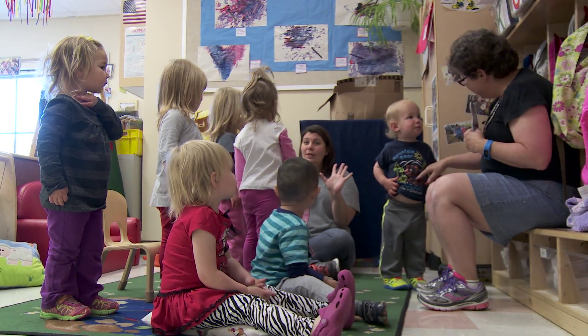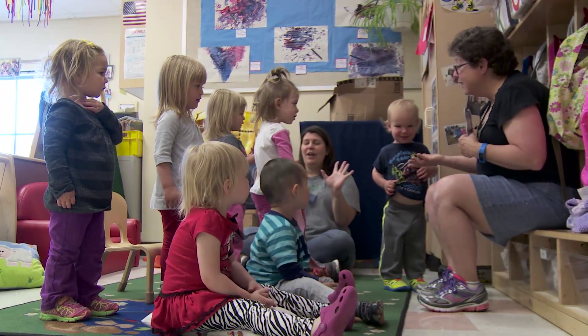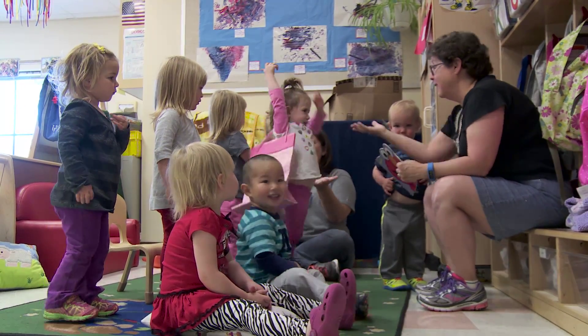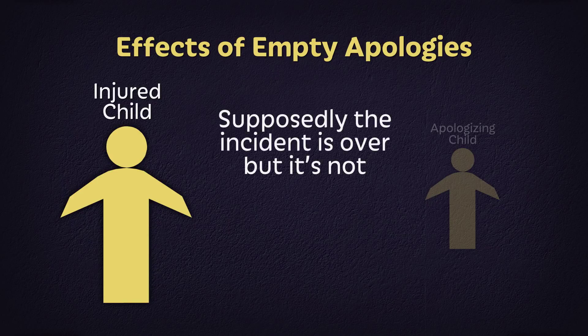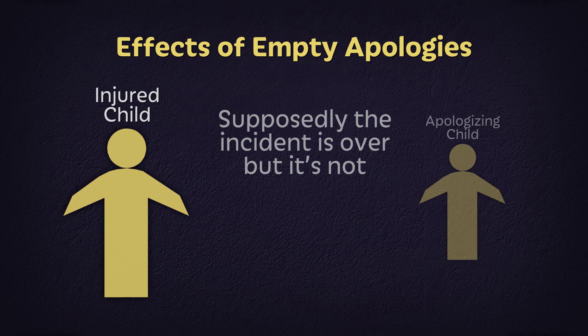Children as young as three are able to tell genuine sorry versus not. So when we make a child walk up to another child and say sorry, everybody knows it's not real — it is not empathic, it is not constructive, it is not real. The victim knows, and that isn't a good place for the victim to be, because now they have the problem: this person said sorry, supposedly the incident is over, but in fact it is not. That's going to simmer away.